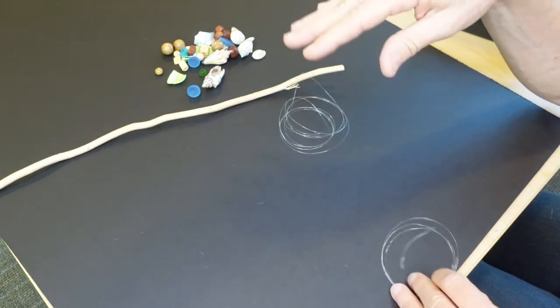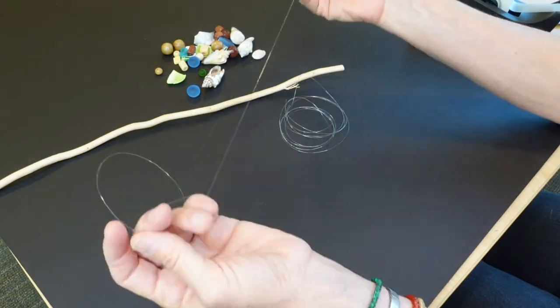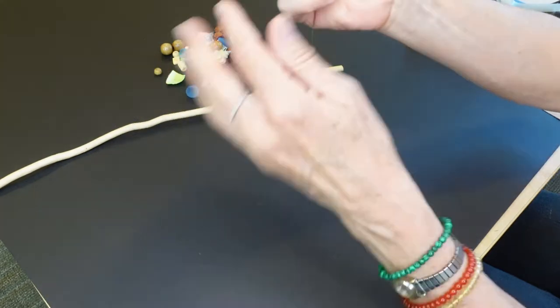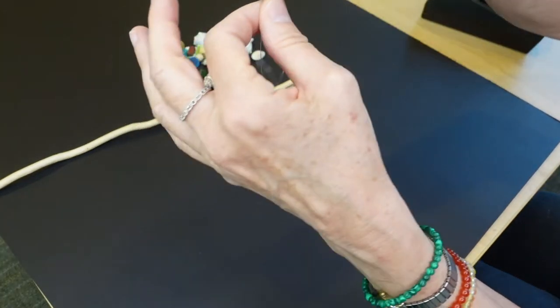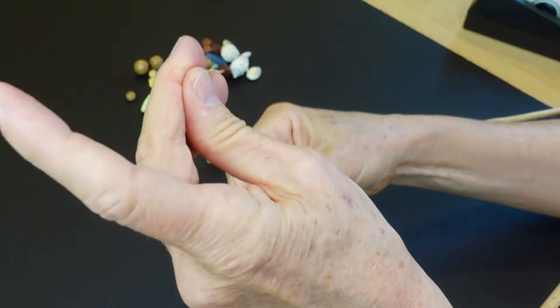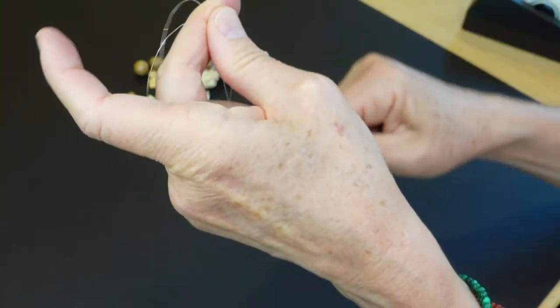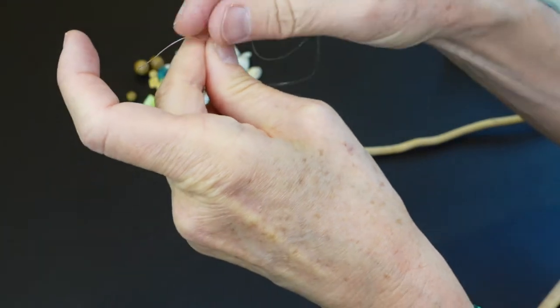So the first thing you do is you cut about, I don't know, this is about a yard of the monofilament. We're going to do each strand one by one. Good luck finding the middle of that one. That wasn't so bad. Pull that a little bit more. Try to get it more or less even.